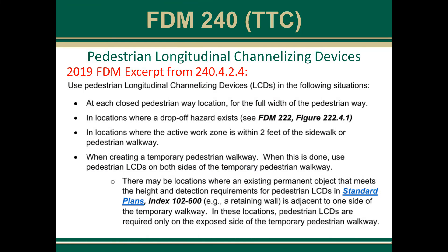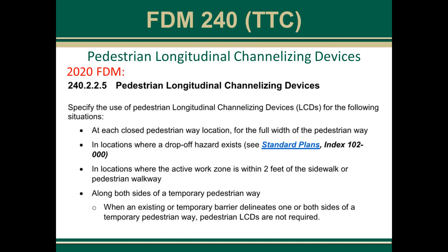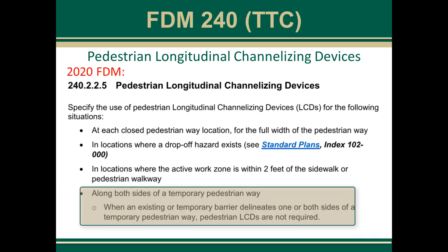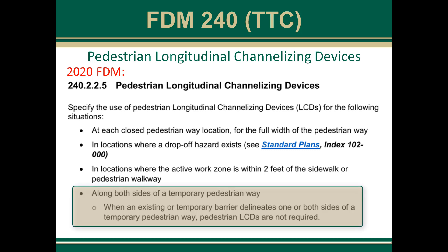Pedestrian longitudinal channelizing devices: the 2019 FDM excerpt from 240.4.2.4 required that pedestrian longitudinal channelizing devices be used on basically all temporary pedestrian ways. However, in the 2020 FDM, they are only required along both sides of a temporary pedestrian way if there is no temporary barrier being used or existing barrier. If there is an existing barrier or temporary barrier on one side of the temporary pedestrian way, a pedestrian longitudinal channelizing device is not required to be placed along that side — as shown in the bottom bullet.